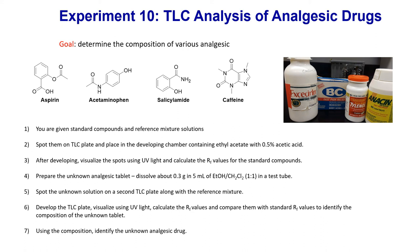So what are we doing in the lab? The goal of this TLC experiment is to determine the composition of various analgesic drugs. You will be given four pure standards, and you will run TLC and compare them with an unknown sample. You will be given a crushed sample of tablets — either Excedrin, Tylenol, Anacin, or BC tablets — and you don't know which one you will receive. This will be your unknown analgesic drug, and you have the standards to help identify it.